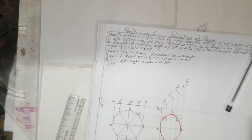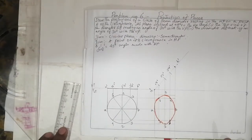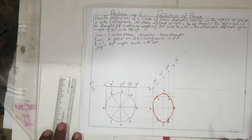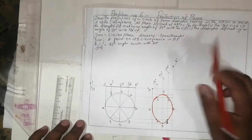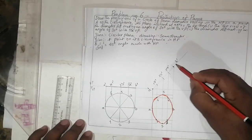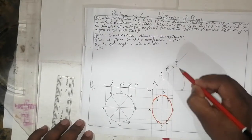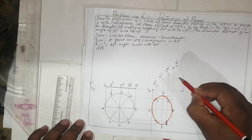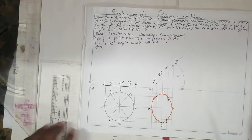You will get a circle like this. This circle is inclined at 45 degrees — this is 45 degrees. Now we are going to take the 30 degree condition: the diameter AB making an angle of 30 degrees with the VP.